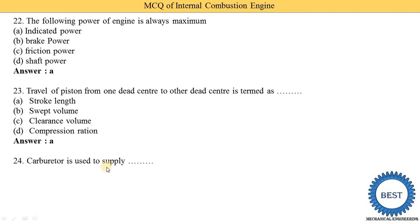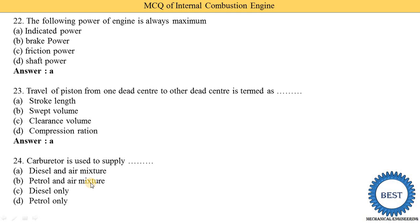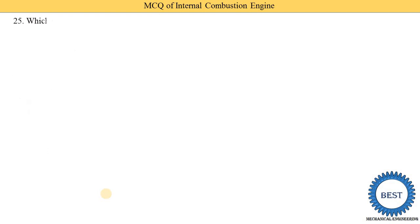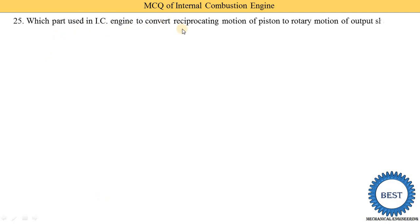Next MCQ: a carburetor is used to supply — option A: diesel and air mixture, option B: petrol and air mixture, option C: diesel only, option D: petrol only. The carburetor is used in a petrol engine and its function is to mix air and petrol and supply it to the engine. So option B — petrol and air mixture — is the correct answer.